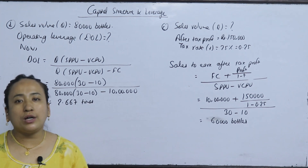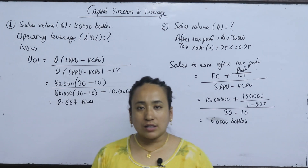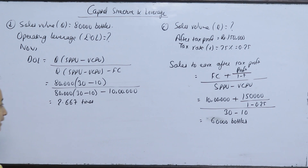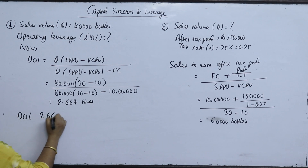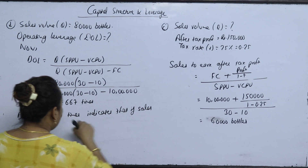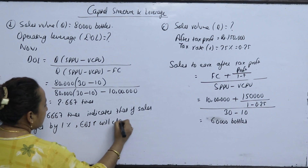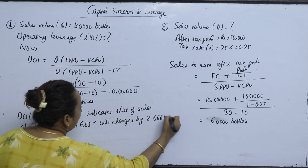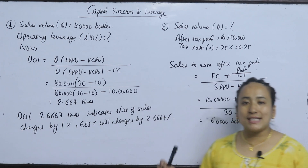Interpretation: DOL measures how a change in sales leads to a change in EBIT (operating profit). EBIT means earnings before interest and taxes — it reflects day-to-day operating transactions, excluding financing items like interest or preferred dividends. A DOL of 2.667 times indicates that if sales change by 1%, EBIT will change by 2.667 percent.